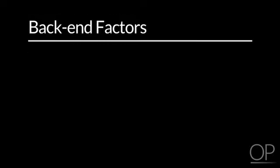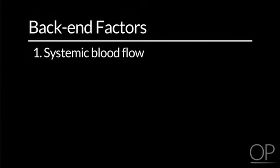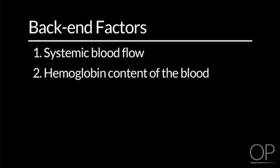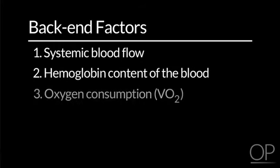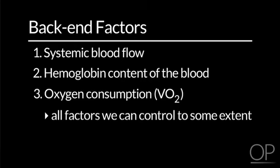The back-end factors consist of systemic blood flow, hemoglobin content of the blood, and oxygen consumption — also abbreviated VO2. The reason these are important is that they are all factors we can control to some extent. It can be difficult sometimes to control the pulmonary-to-systemic flow ratio or even pulmonary venous saturations, but there are ways to modify systemic flow, hematocrit, and O2 consumption that can be very helpful.